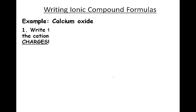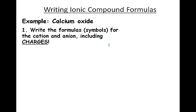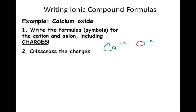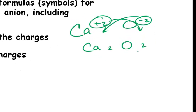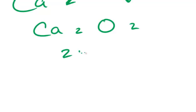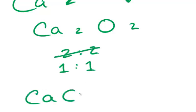Calcium oxide: write the formulas. Calcium is positive two; oxide is negative two. Crisscross the charges — Ca with a negative two, O with a positive two. Drop the charges. Here we have a two-to-two ratio, which is the first time we reduce. That reduces down to one-to-one, so the formula is CaO.